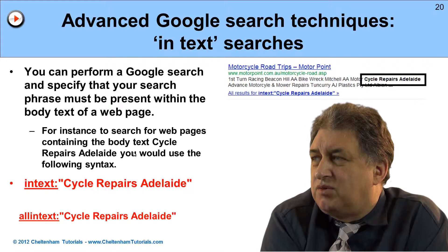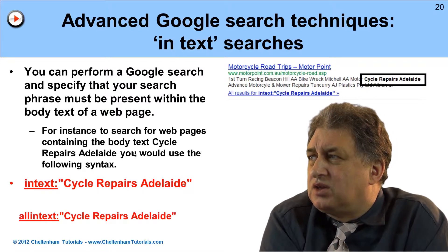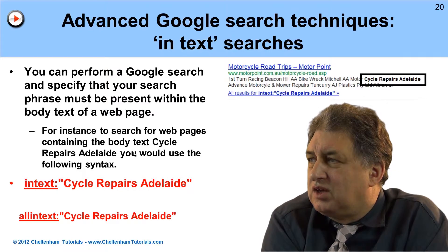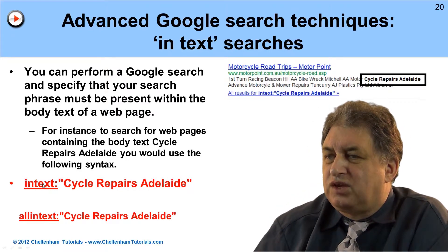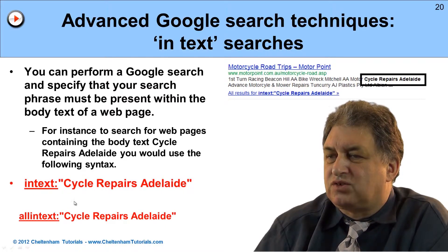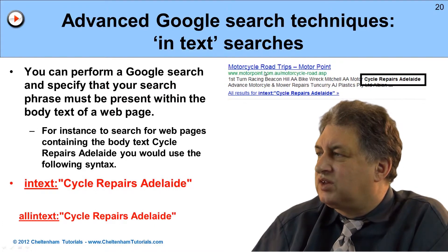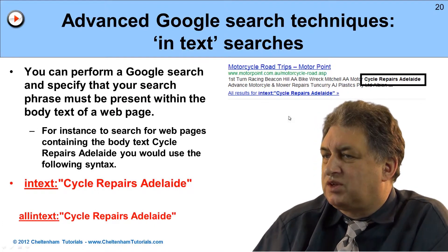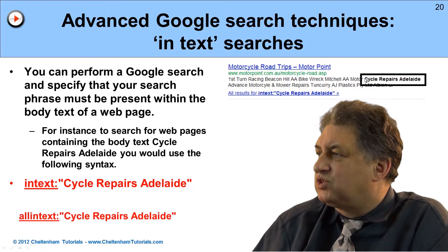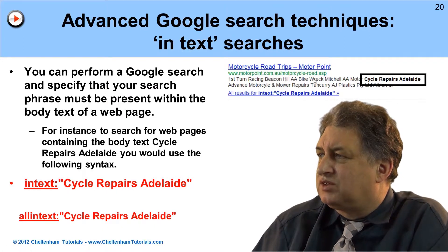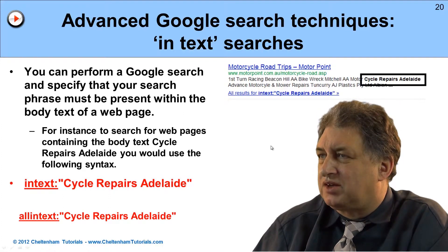Carrying on the theme of using Google for keyword research, you can search for actual text displayed within a website using the syntax 'intext:' or 'allintext:' followed by your search terms. For example, searching for 'cycle repairs Adelaide' shows results where that text appears within the body text of the actual website - not in the URL or title, but in the body text itself.